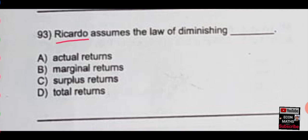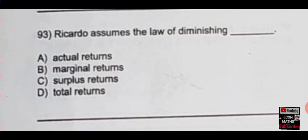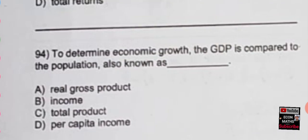The next question: Ricardo assumes a law of diminishing — the options are actual returns, marginal returns, surplus returns, or total returns. Ricardo was a classical economist who gave the labor theory of value, and he assumes diminishing marginal returns. By diminishing marginal returns, after some optimal level of capacity is reached, additional factors of production result in smaller and smaller increases in output. The correct option is diminishing marginal returns.